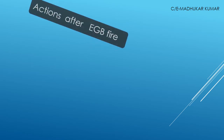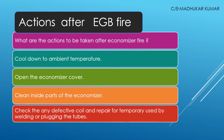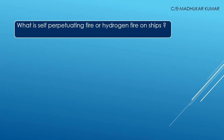Actions taken after the EGB fire: Cool down the main temperature, open the economizer cover once it is cooled down sufficiently, and clean the inside parts of the economizer. Inspect and identify defective coils, tubes, and pipelines. Make sure these can be repaired — welding of tubes or flooding of tubes may be necessary to ensure no water leakages, and the EGB should be returned to a stable condition.